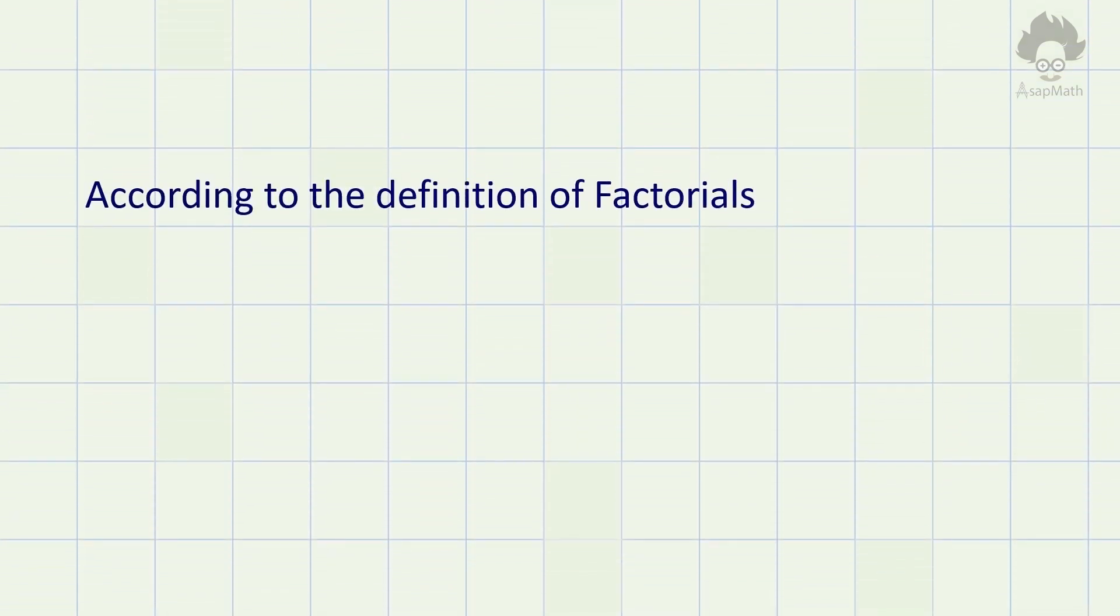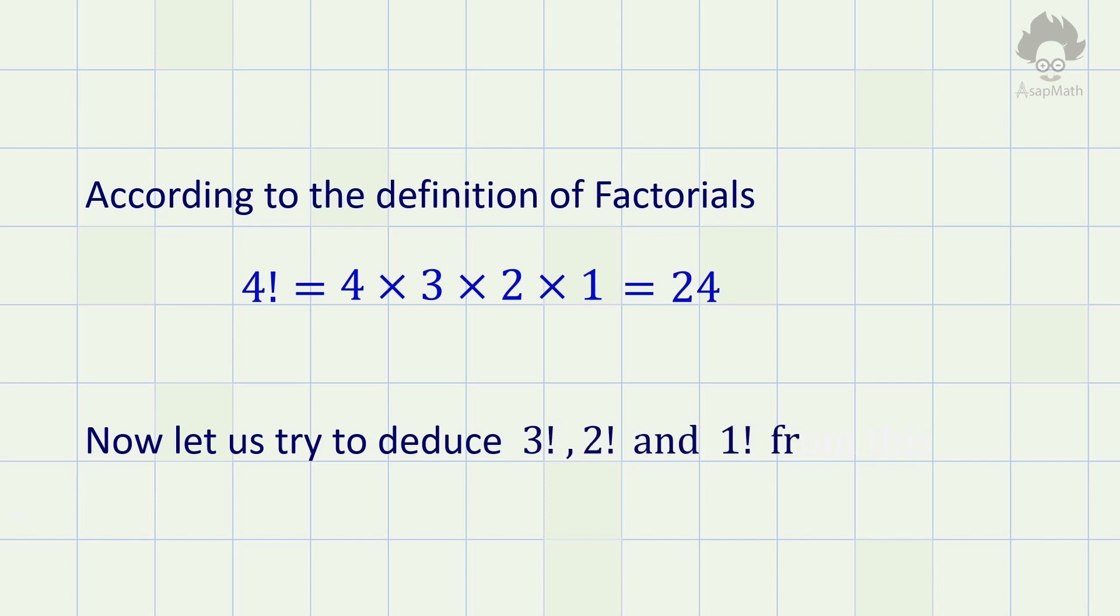As we discussed earlier, according to the definition of factorial, factorial 4 equals the product of 4, 3, 2, and 1, which is equal to 24. We also can find the factorials of 3, 2, and 1 from the definition, and from that we will try to understand any pattern.